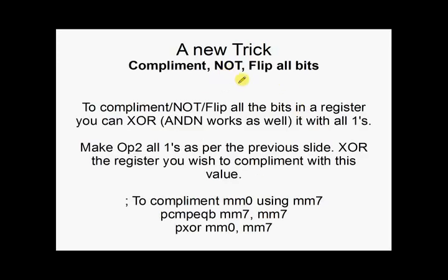Okay. A new trick to complement or flip each of the bits. All you have to do is XOR or you can use ANDN with all ones. So you make sure that the second operand is all ones and you're fine. So say we want to, for example, complement MM0. We've got to pick a temporary register. I usually use MM7 or MM6, some of these high registers. But, you know, use whatever's free. So the first line just here, I've set that temporary register MM7 to all ones using the trick from the previous slide. And the next thing, PXOR MM0 MM7 will effectively complement every single bit in MM0. All of the ones will become zeros. All of the zeros will become ones.